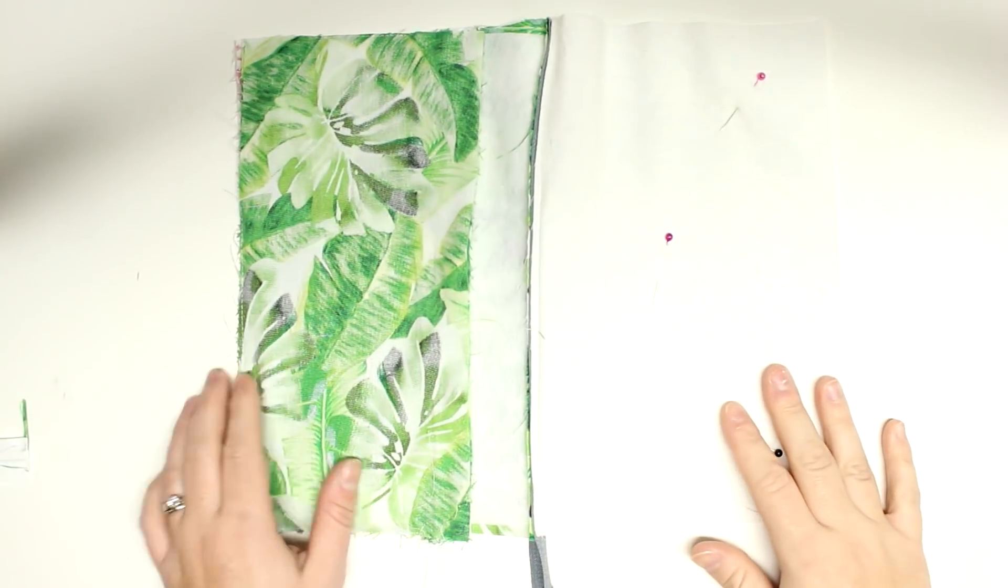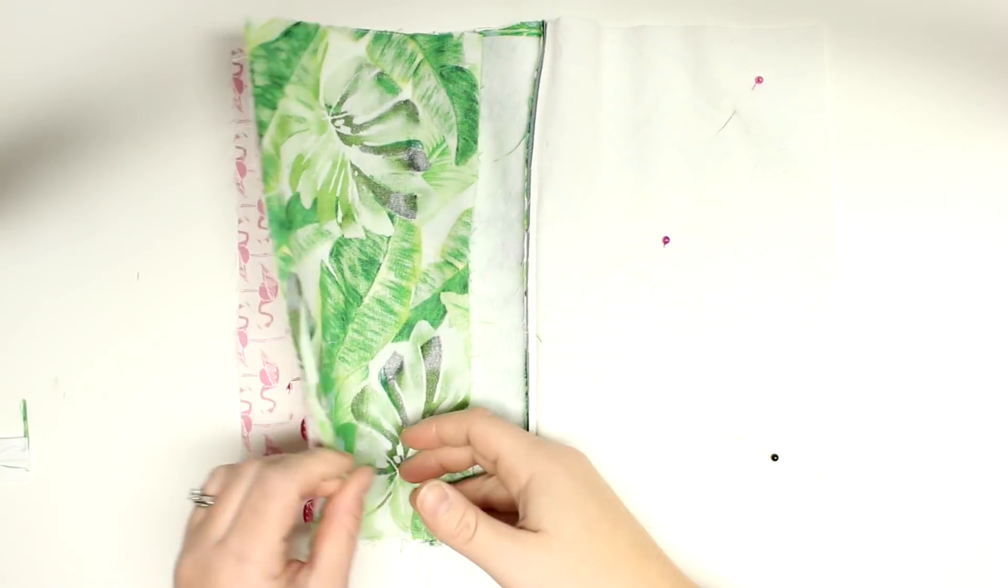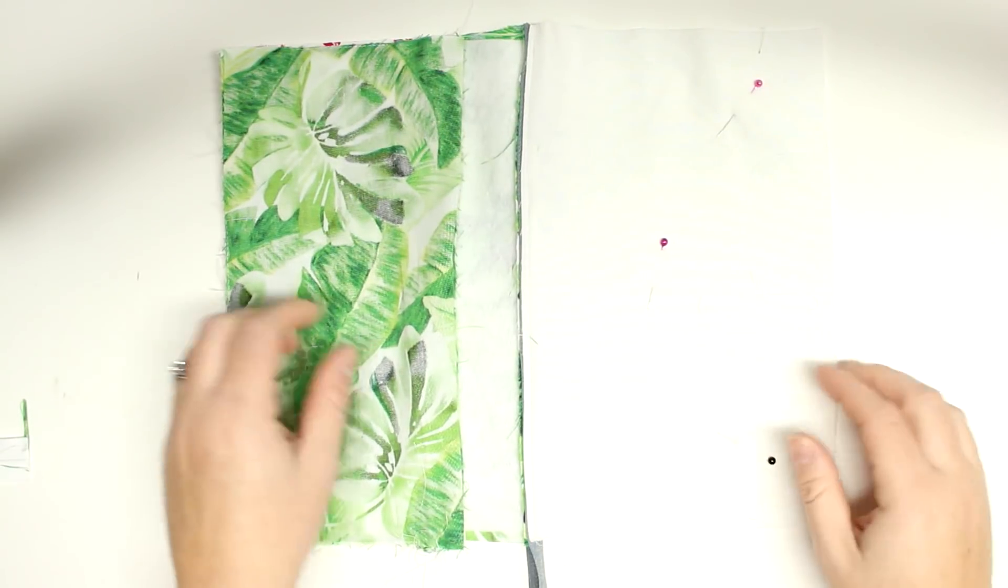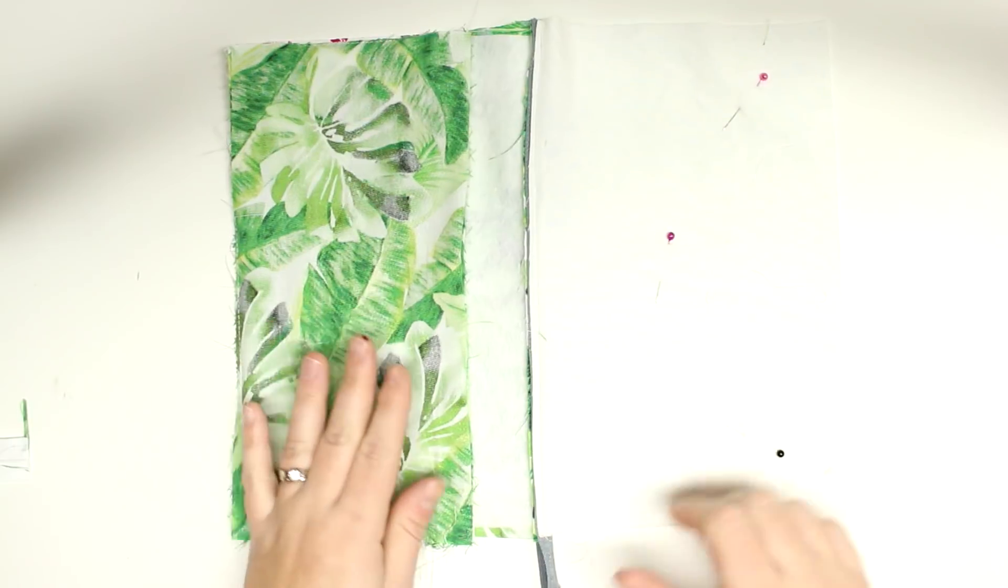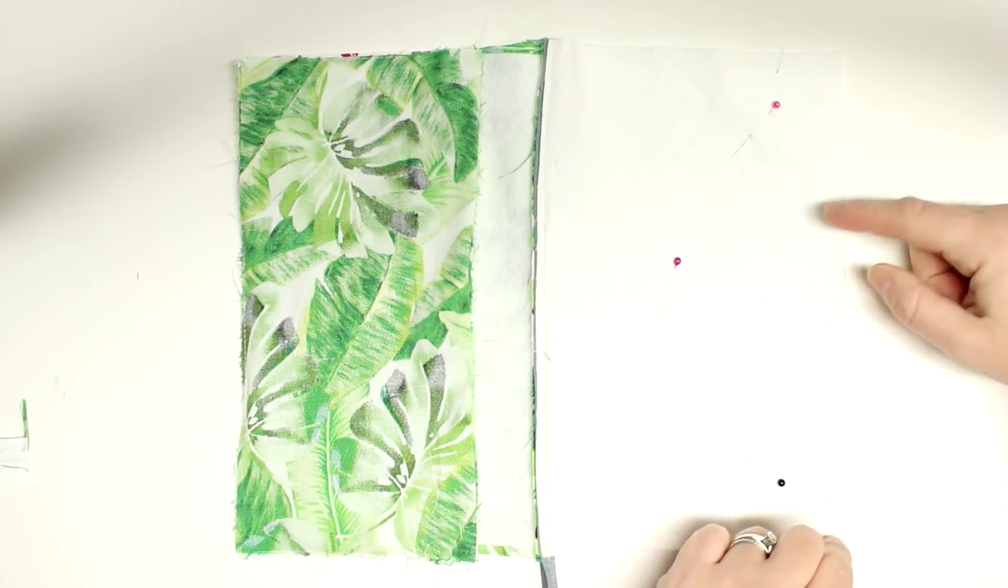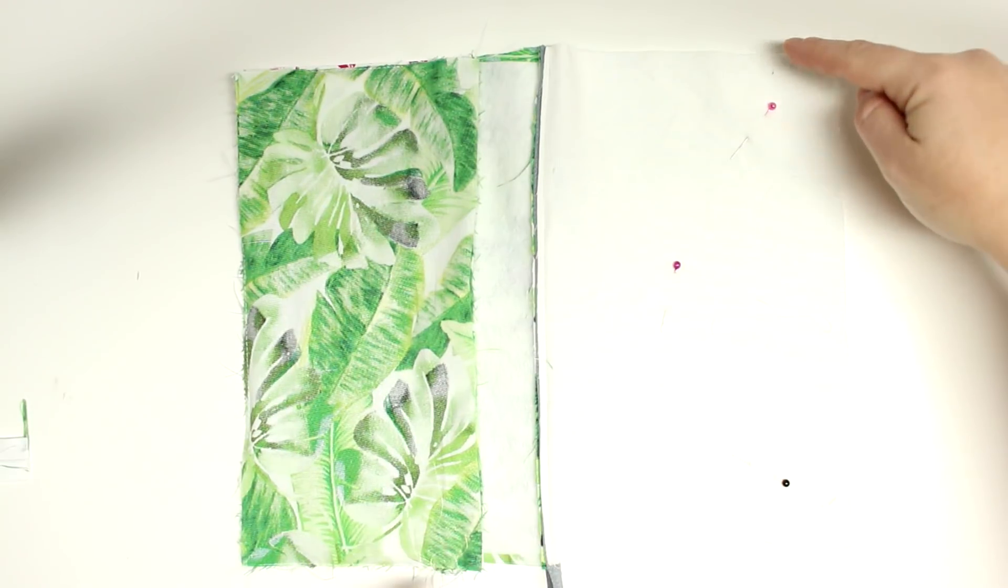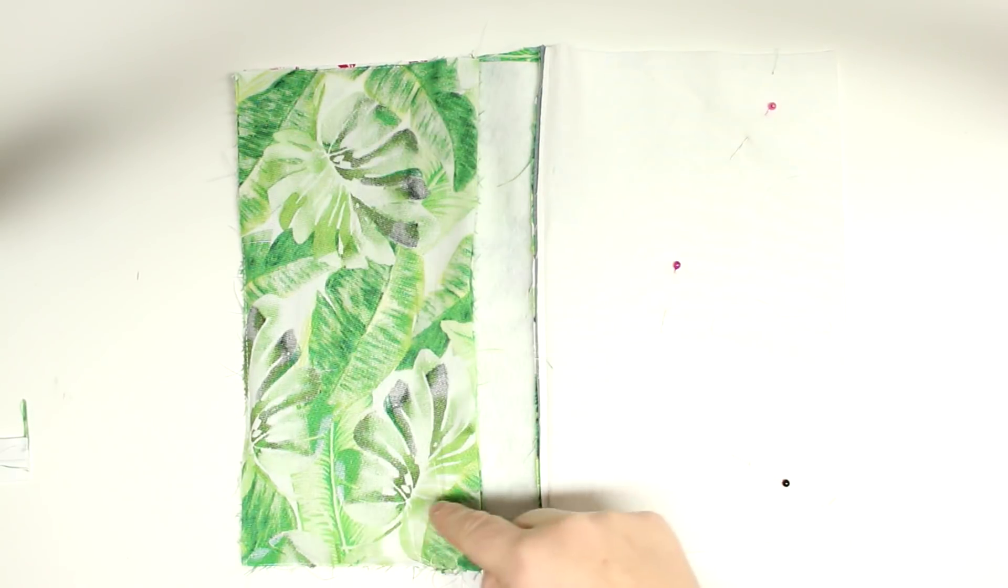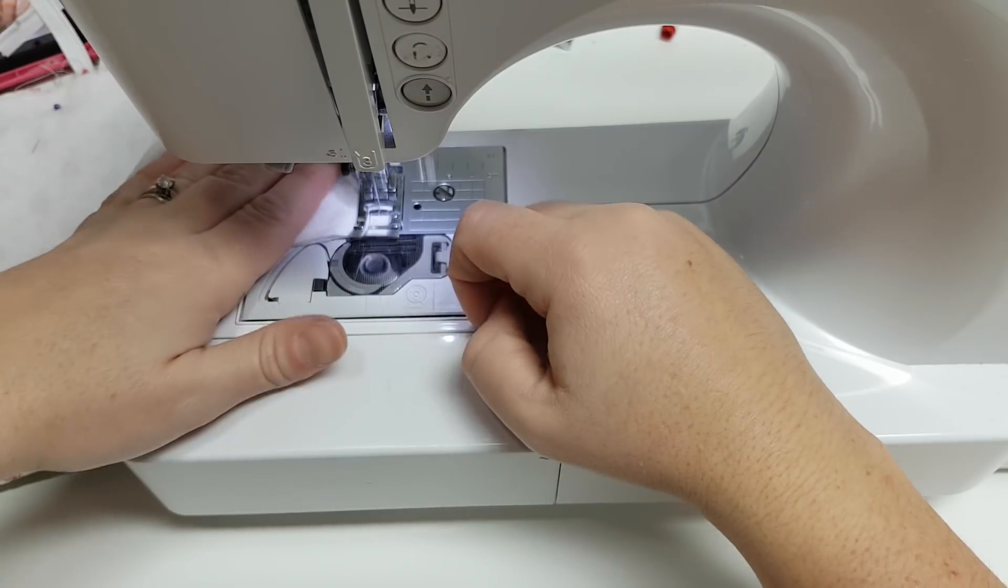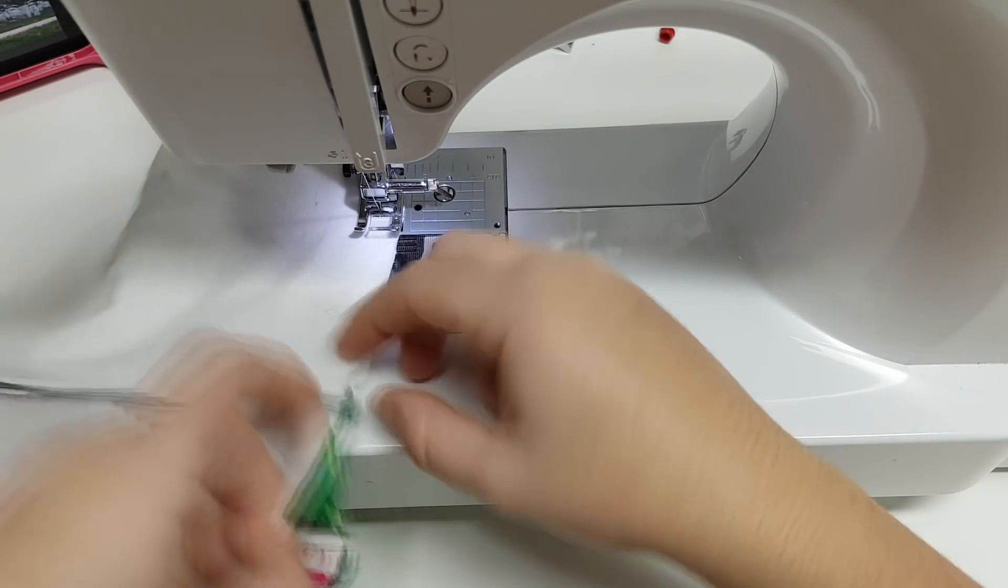Okay, so now that our zippers are installed, we're going to lay it flat on the table with the right sides of the outer fabric together and the right sides of the lining together. And then we will sew all the way around, leaving a four inch gap in the lining. So I'm going to start in the middle of the lining.